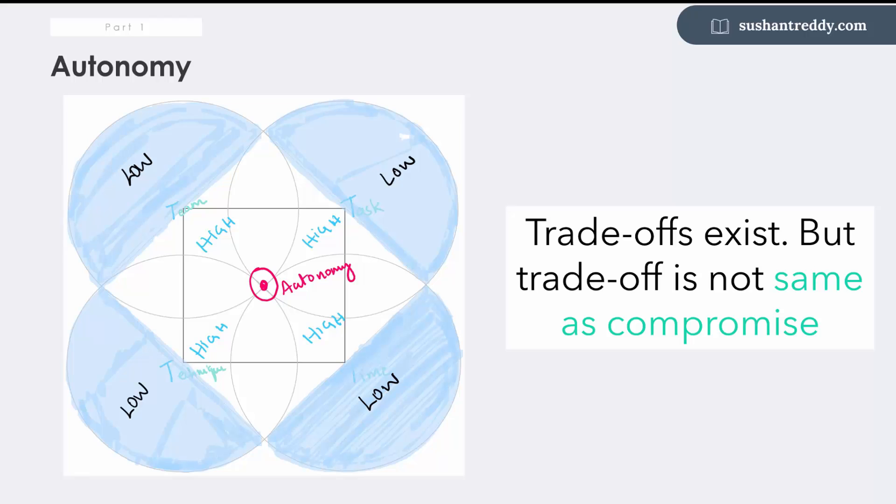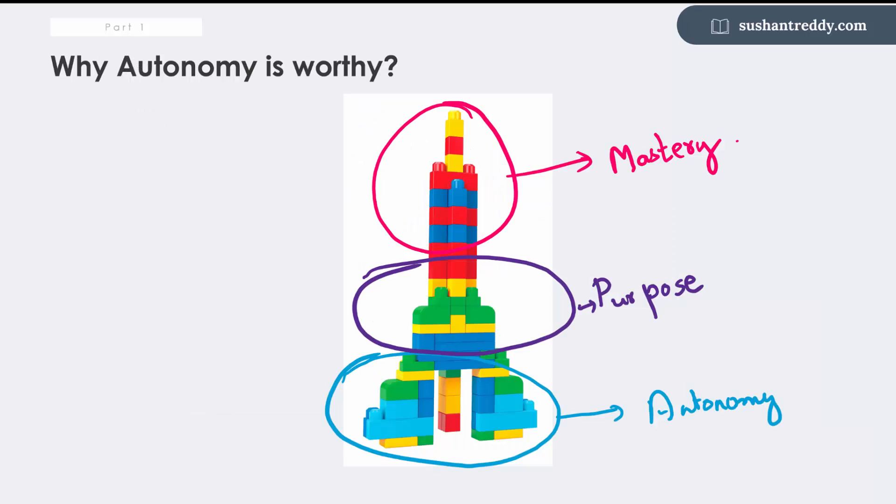None of these are absolute freedoms. It's important to realize that we don't live in a utopian world—there are always some trade-offs. But trade-off is not a compromise. If you are heavily compromised on your freedom of choice, you are just not autonomous.